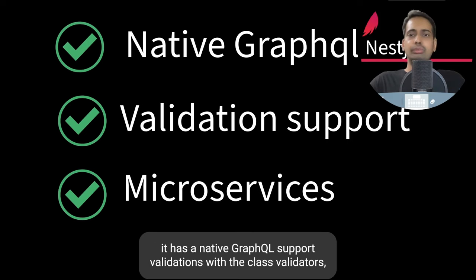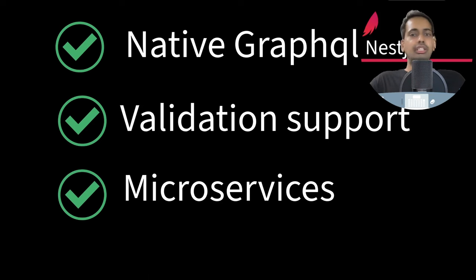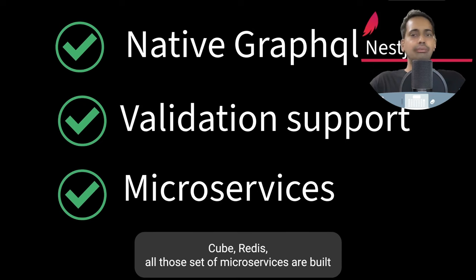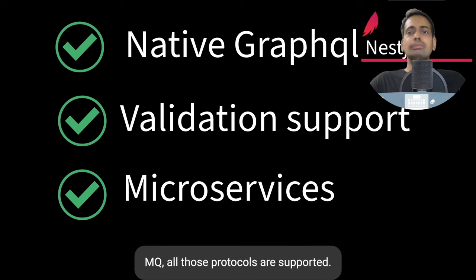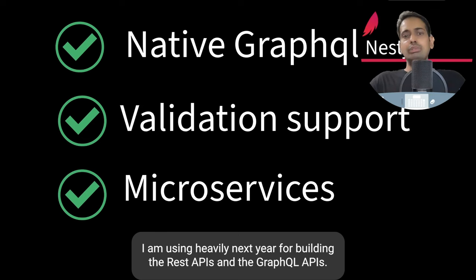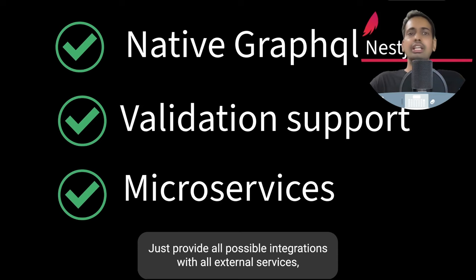NestJS has native GraphQL support, validations with class validators, and also supports microservices based on TCP, AMQP, Redis, gRPC — all those protocols are supported. I use NestJS heavily for building REST APIs and GraphQL APIs, and I have even tried Apollo Federation integration with NestJS. It provides all possible integrations with external services.